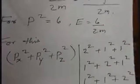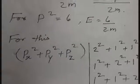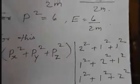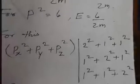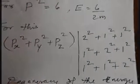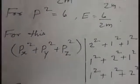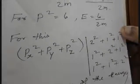So px-squared plus py-squared plus pz-squared equals 6. One combination is 2-squared plus 1-squared plus 1-squared. The momentum in the x-direction gives another combination: 1-squared plus 2-squared plus 1-squared. A third combination is 1-squared plus 1-squared plus 2-squared. So p-squared equals 6 in all three cases, giving the same energy state epsilon equals 6 over 2m. We create 3 distinct states from these integer combinations.